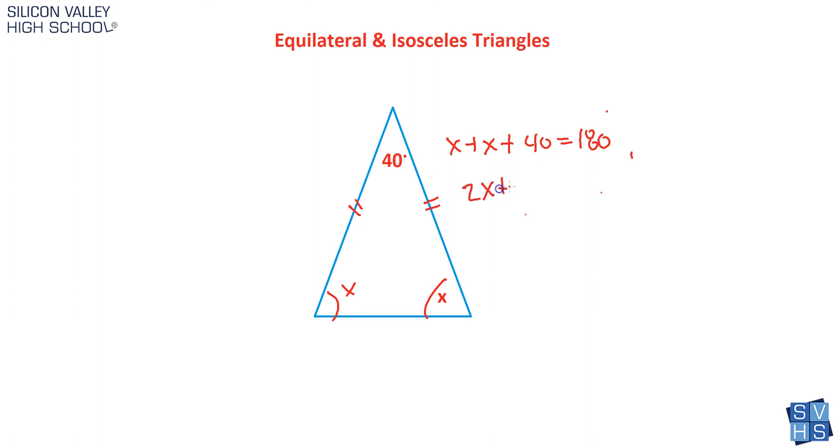And then I would have 2X plus 40 equals 180. This gets pretty easy. Minus 40, minus 40. 2X equals 140. Divide by 2, divide by 2. And then X definitely equals 70 degrees. So that would be it. And they didn't ask us for both, but we could easily put them in. If this is 70 degrees, because these are isosceles, well, then this is 70 degrees.